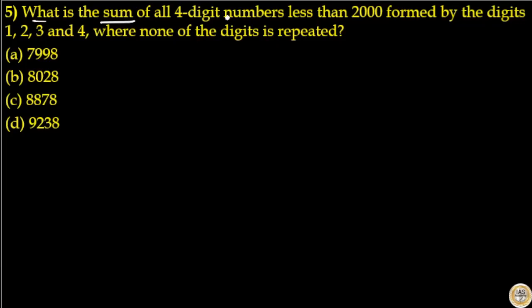What is the sum of all four-digit numbers less than 2000 formed by the digits 1, 2, 3, and 4, where none of the digits is repeated?